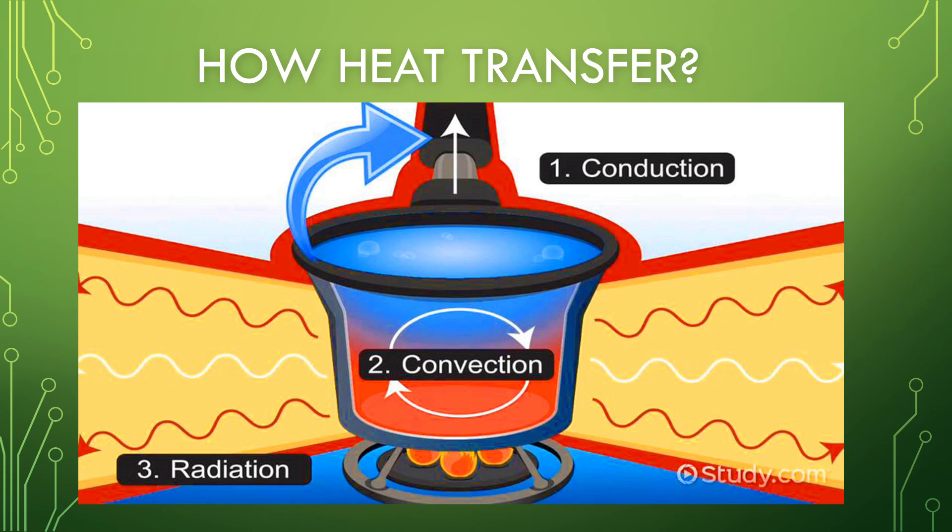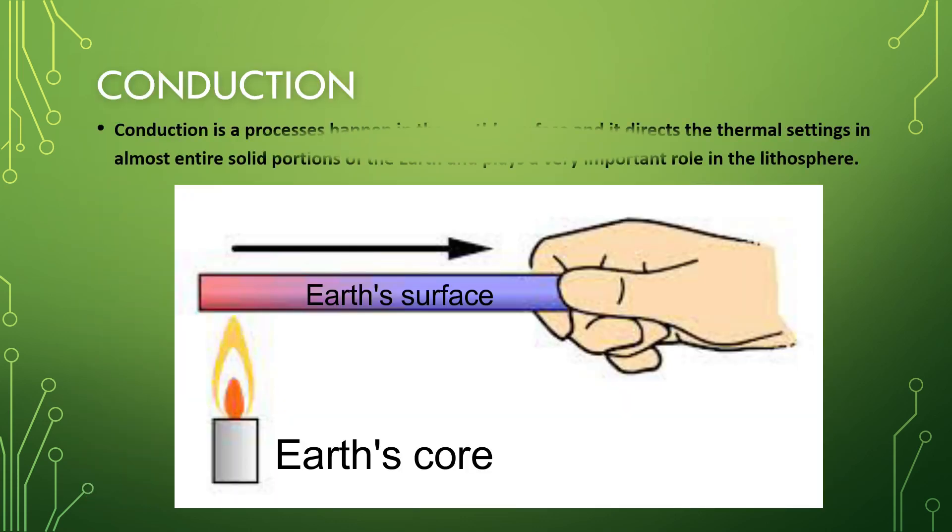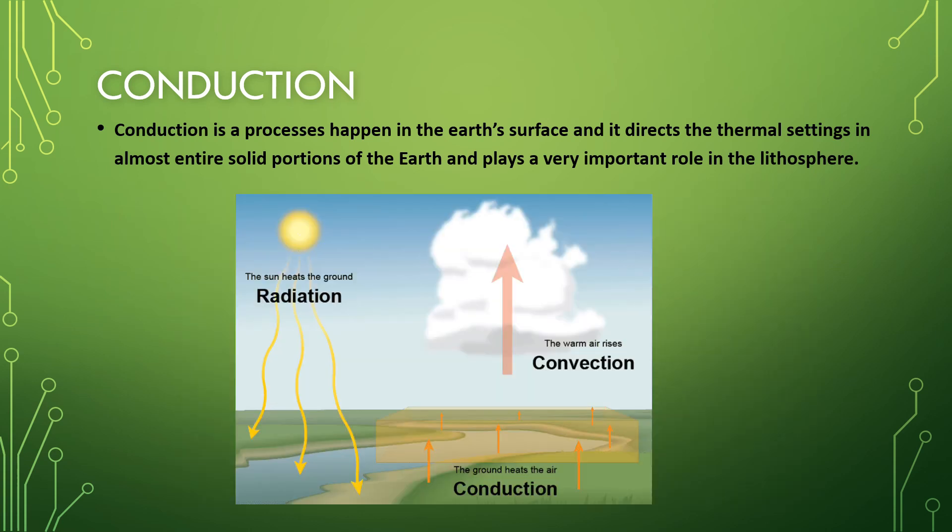There are three processes that can transfer heat: conduction, convection, and radiation. Conduction processes happen in the Earth's surface and direct the thermal settings in the entire solid portion of the Earth, playing a very important role in the lithosphere. Conduction carries heat from the Earth's core and radiation from the Sun to the Earth's surface.